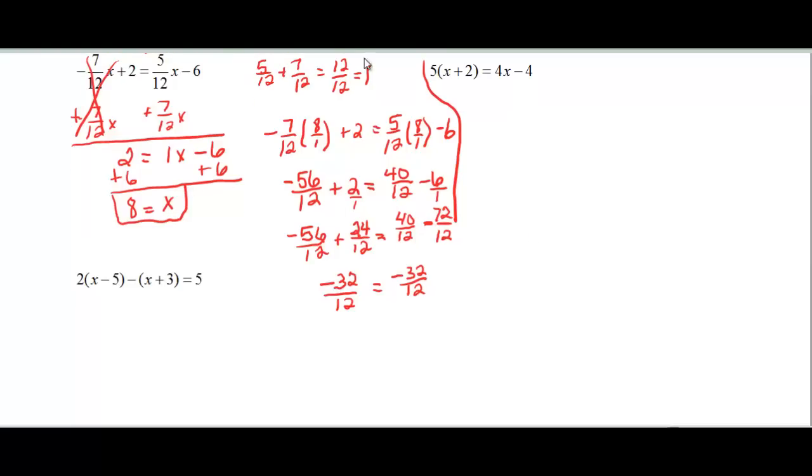Alright, two more problems. So, now this time we have some distributing that we have to do, because we have a 5 times the quantity on the left hand side. So we need to distribute the 5 before we can start moving things across. So 5 times x, and then plus 5 times 2, which would be 10, is equal to 4 times x minus 4. There was nothing to do on the other side.